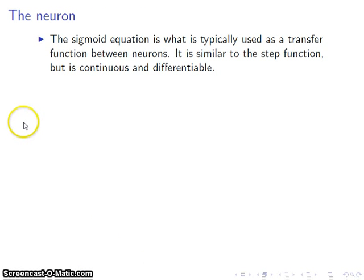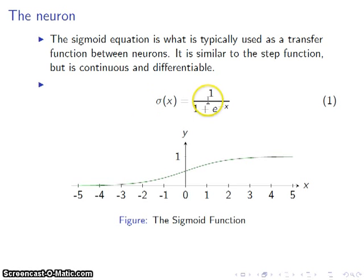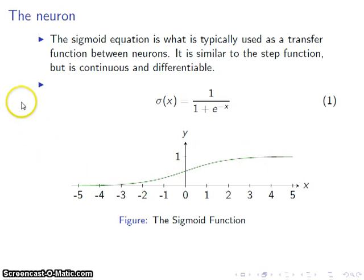We're going to use the sigmoid transfer function because it's very nice. It's based on an exponential expression, as we can see here. It has some of the step-like qualities that we need for the concept of a neural network, but is nice and smooth, which means we can do calculus on it.